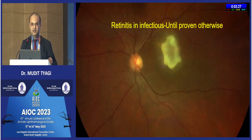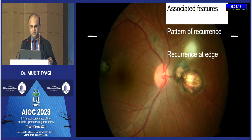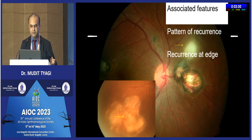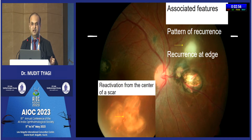Remember the dictum: retinitis is infectious unless proven otherwise. Any case of retinitis — be it toxoplasma or anything else — presume it to be infectious until proven otherwise. One important clinical clue in toxoplasma is the pattern of recurrence: it usually occurs at the edge of an old pre-existing scar. In contrast, TB lesions reactivate from the center of a scar, whereas toxoplasma lesions reactivate from the edge — a very clean classical clinical clue to differentiate between these two.